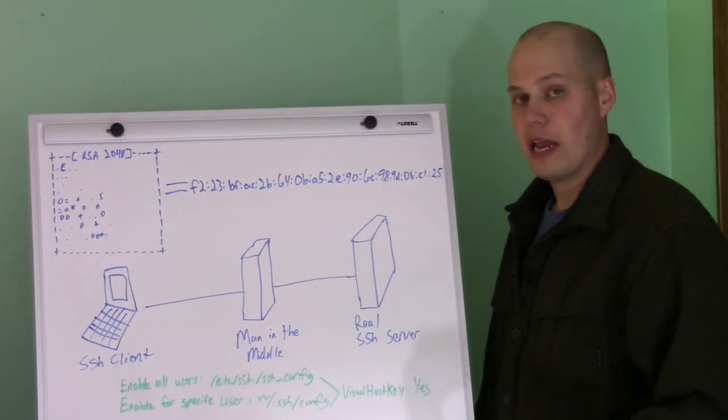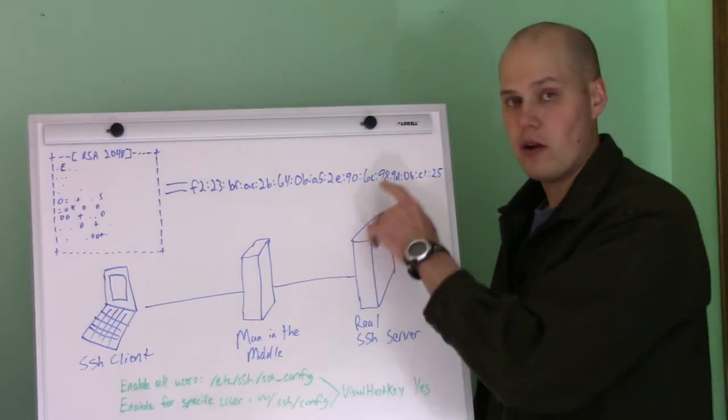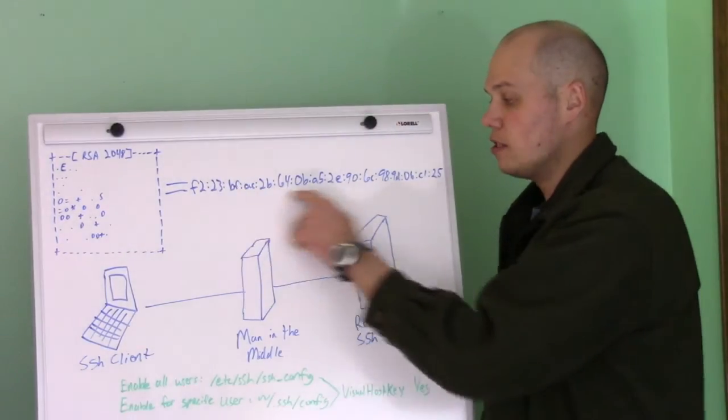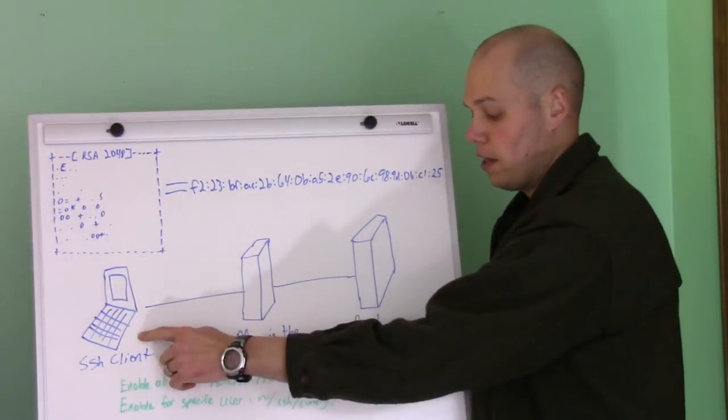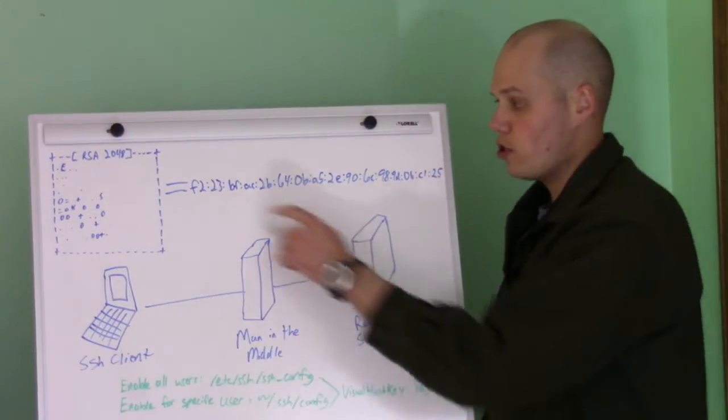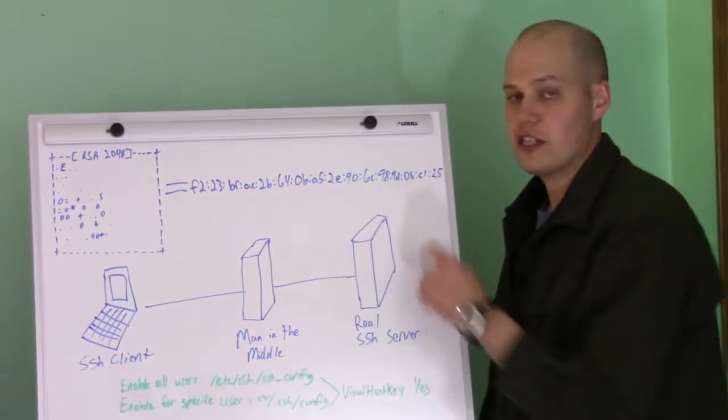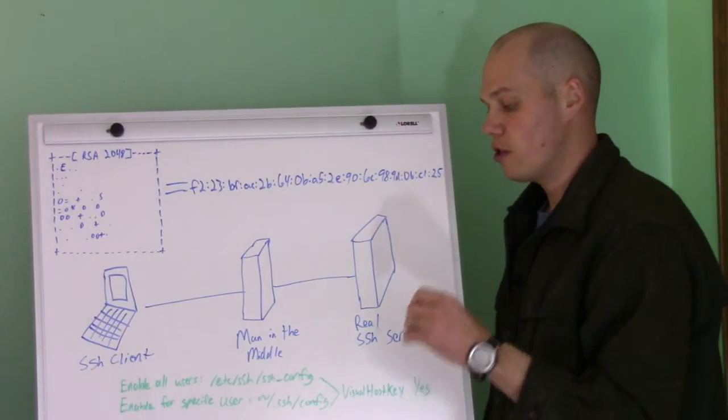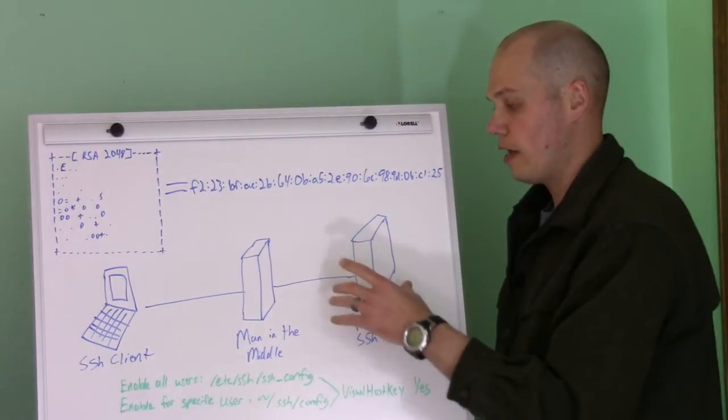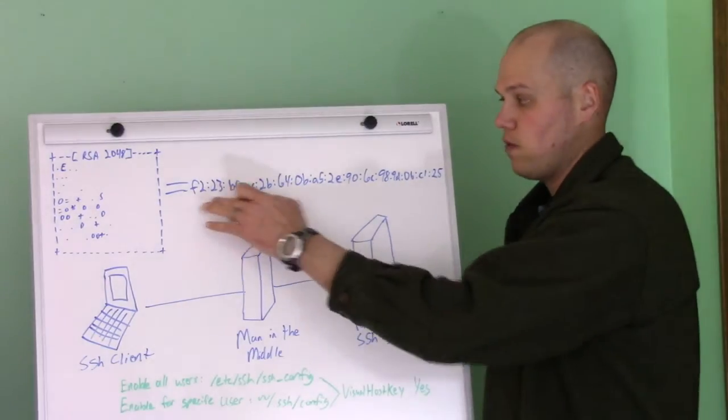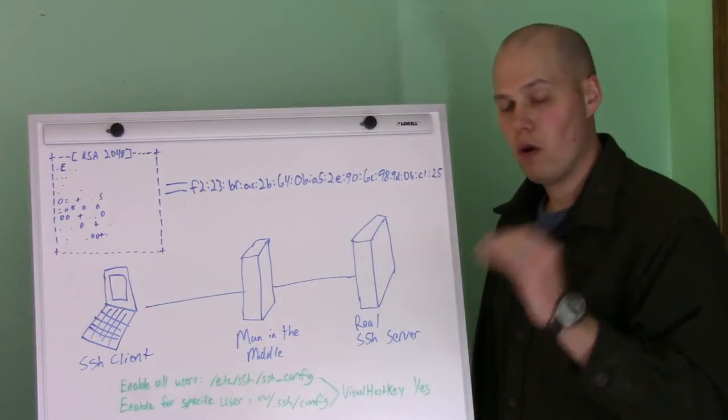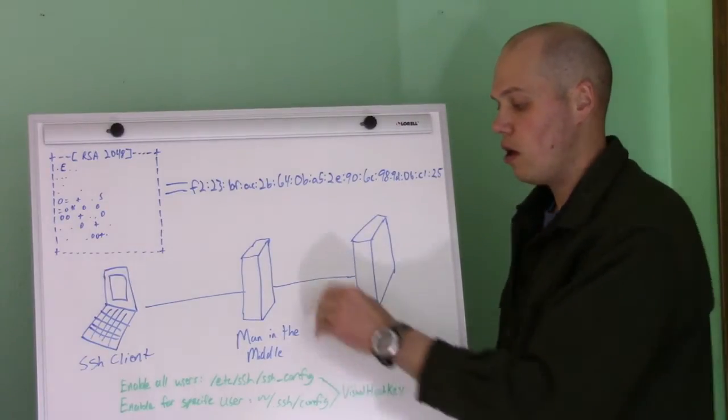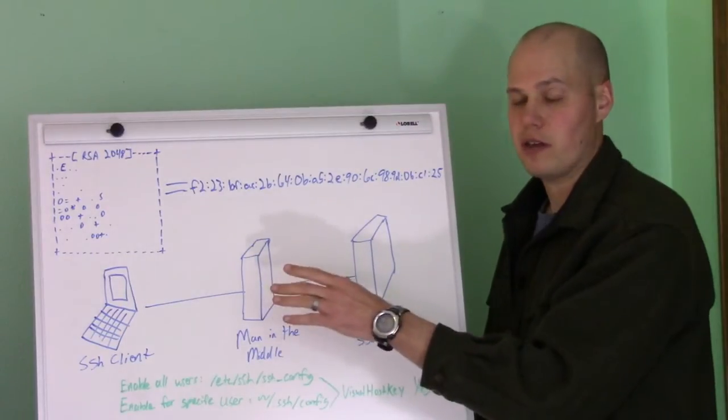And what's cool about SSH is on any further connections, since you have that known host file, it caches this, and through the cryptography, it'll verify that you're talking to the real server. So once you have the key cached in your known host file, you can be assured there's no man-in-the-middle attack, as long as you verify this on the first connection. So that's kind of some background on why host keys are so important. It's all about preventing this man-in-the-middle attack.